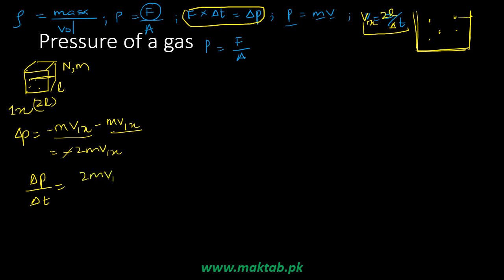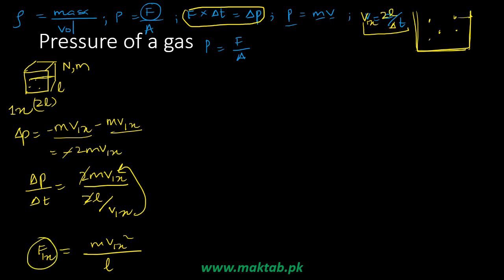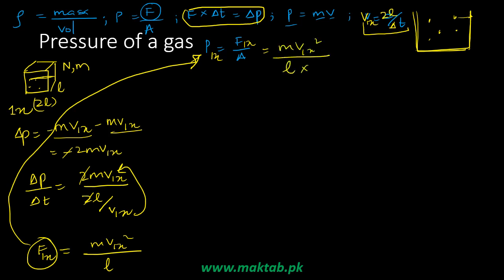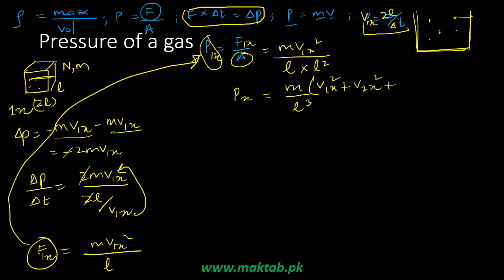Dividing the change in momentum 2mv₁ₓ by the change in time 2L/v₁ₓ, we get force = mv₁ₓ² / L for one molecule. Pressure is force over area, so for one molecule: P = mv₁ₓ² / L × (1/L²) = mv₁ₓ²/L³. To get total pressure in the x-direction for all molecules, we sum all velocities: v₁ₓ² + v₂ₓ² + ... + vₙₓ².